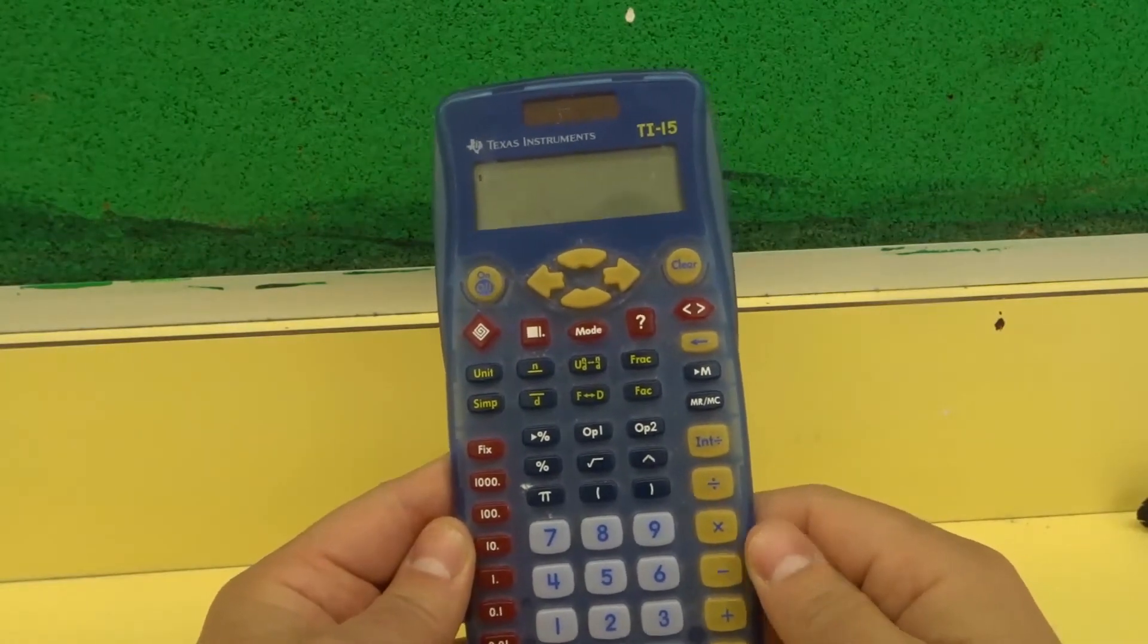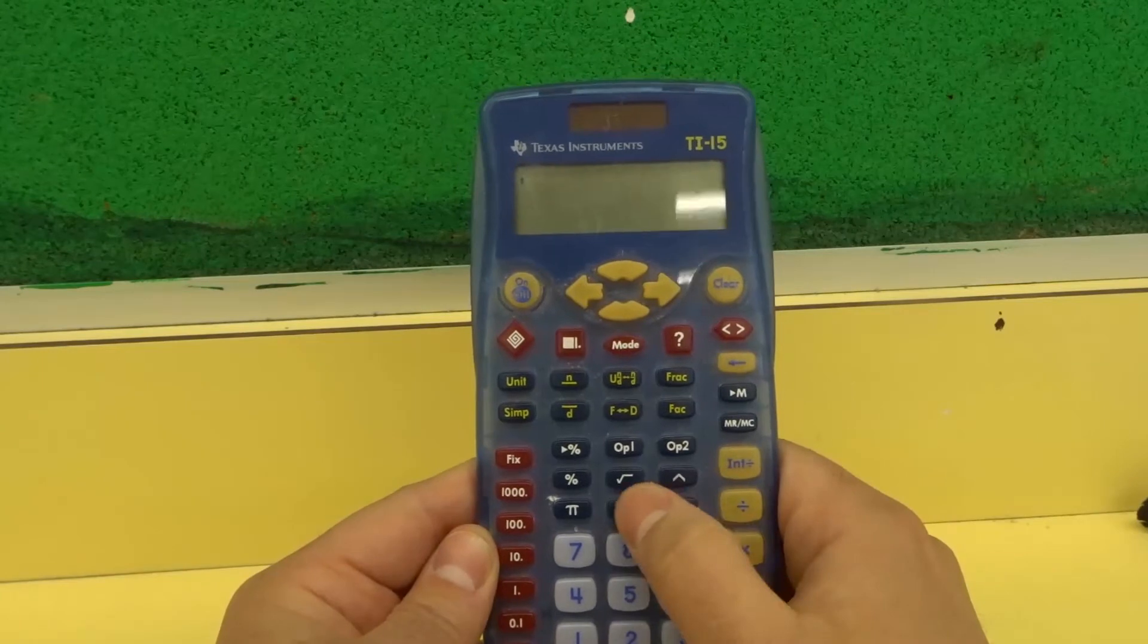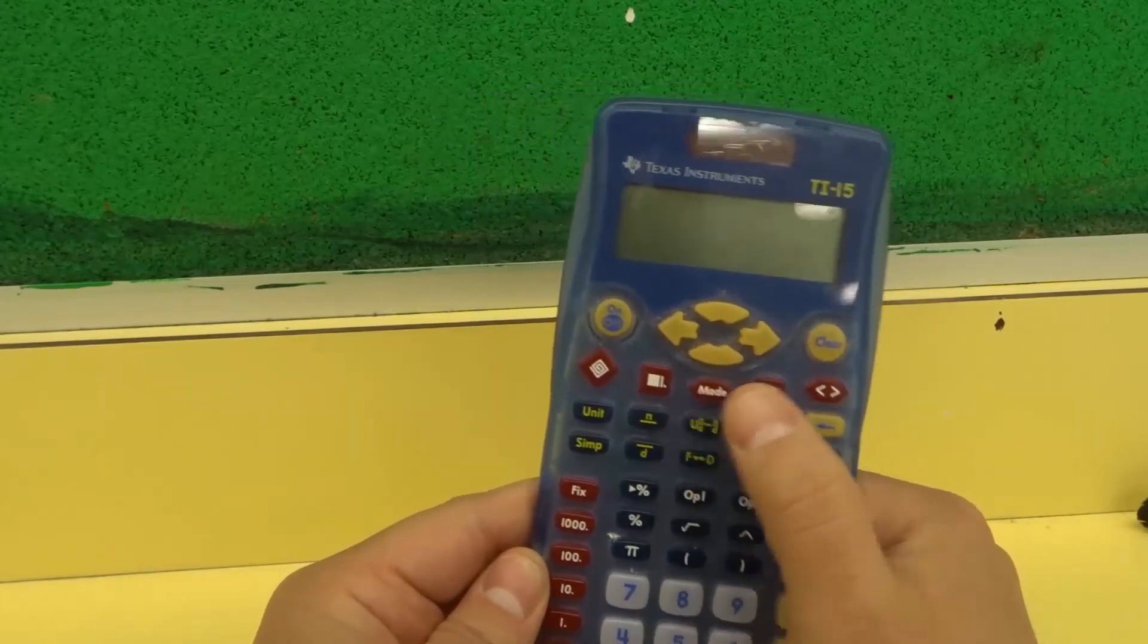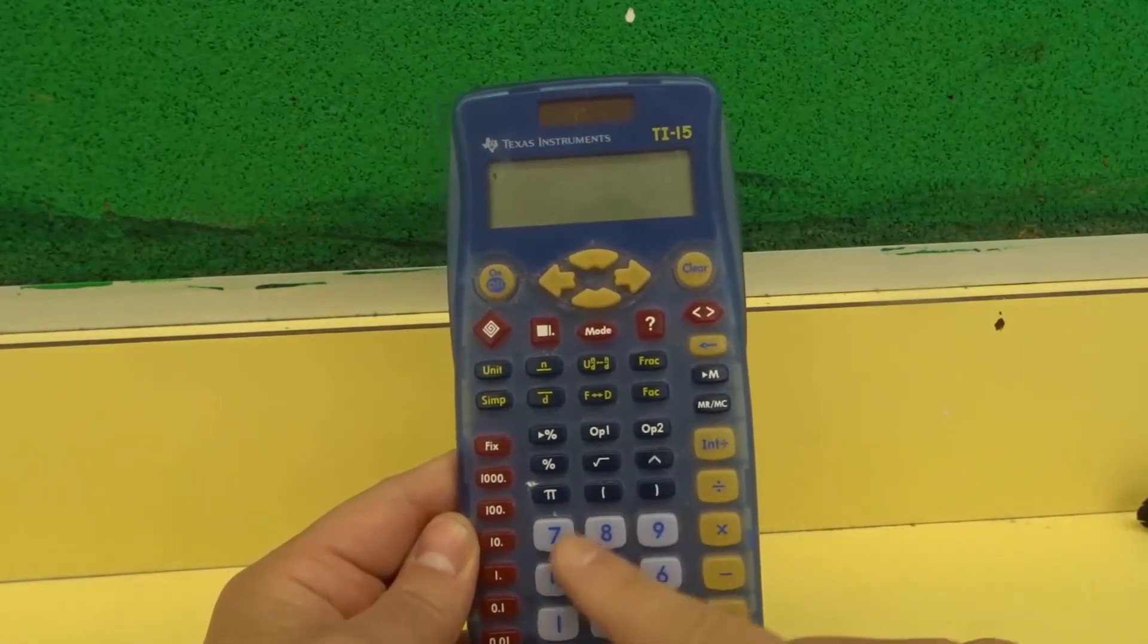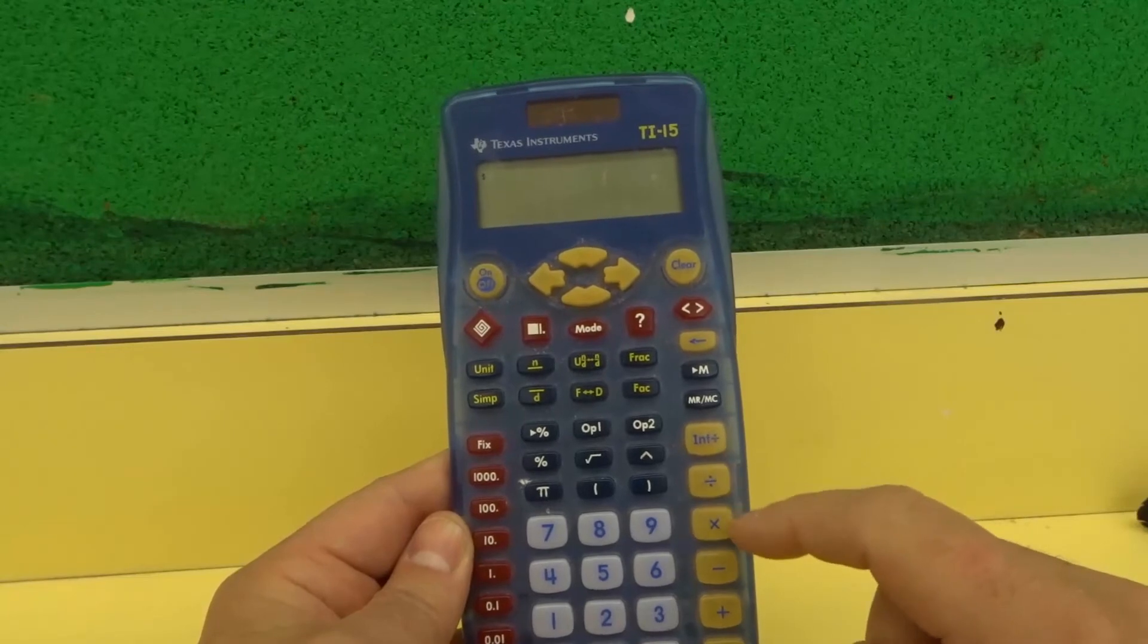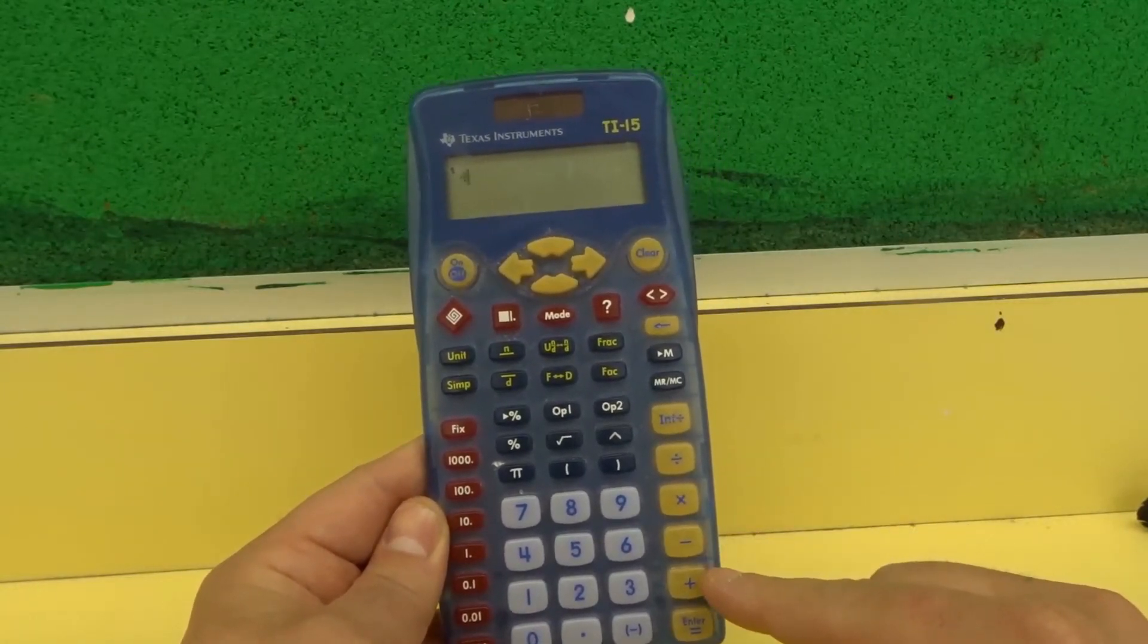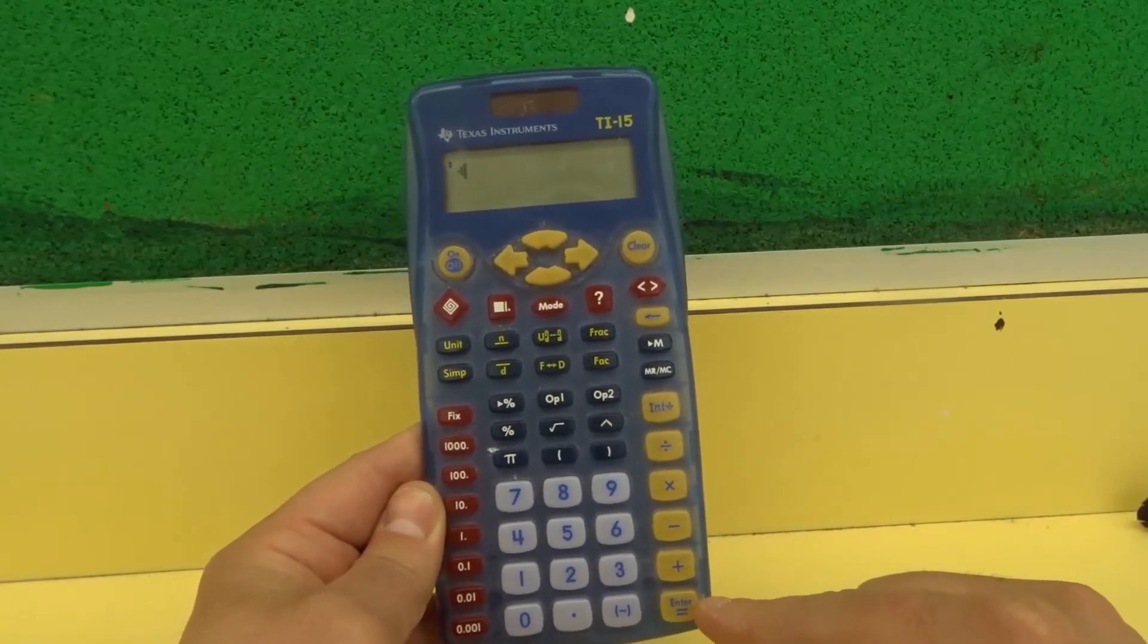Now there are other options in this calculator that I'm not going to go over. Like you can use brackets for more advanced equations. You can go back. There's lots of other options, but the main ones that you need to know are the digits that I outlined right there. Also, the operations. So divided by, multiplied by, subtracted, or added to. And then equals. Very easy to understand.